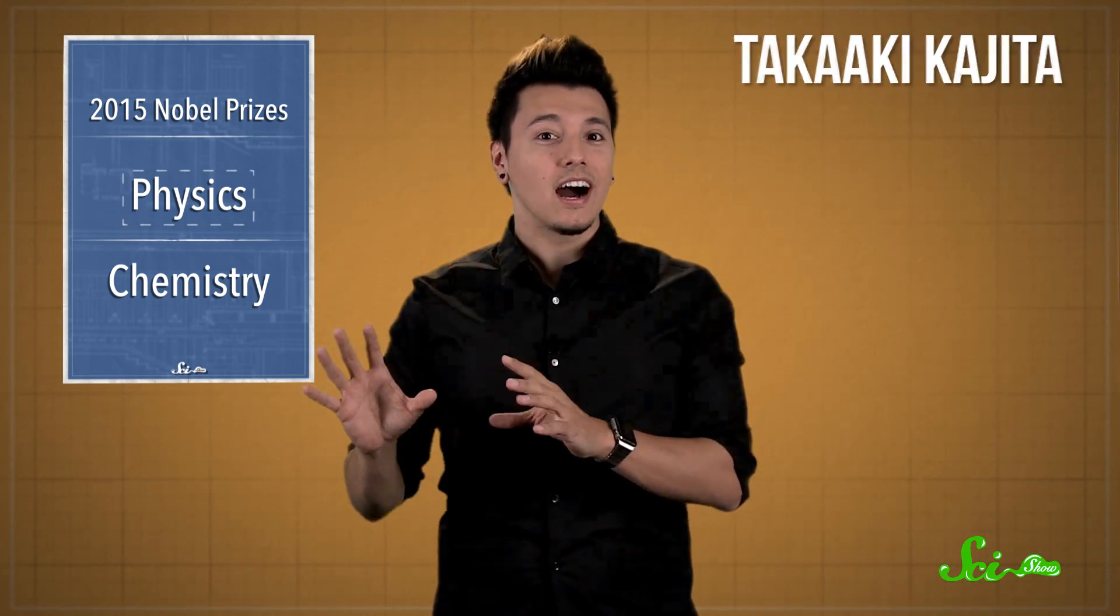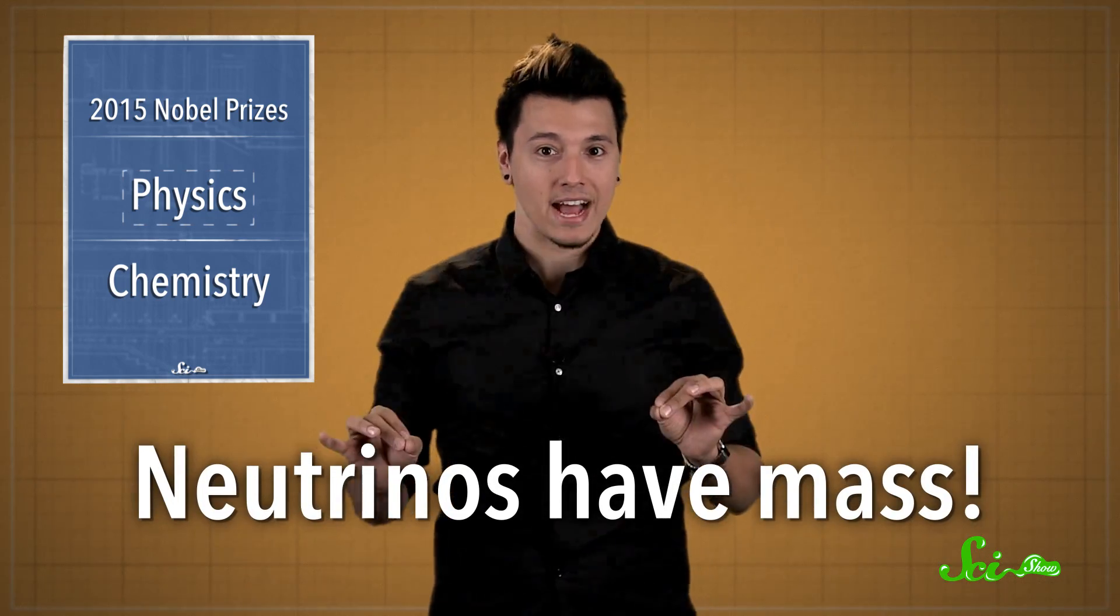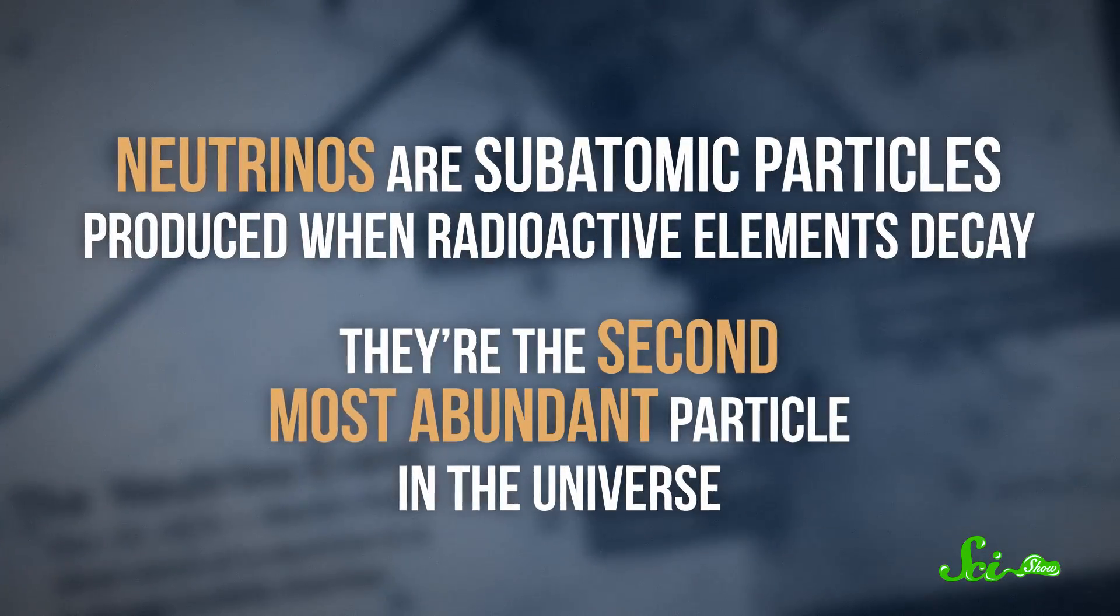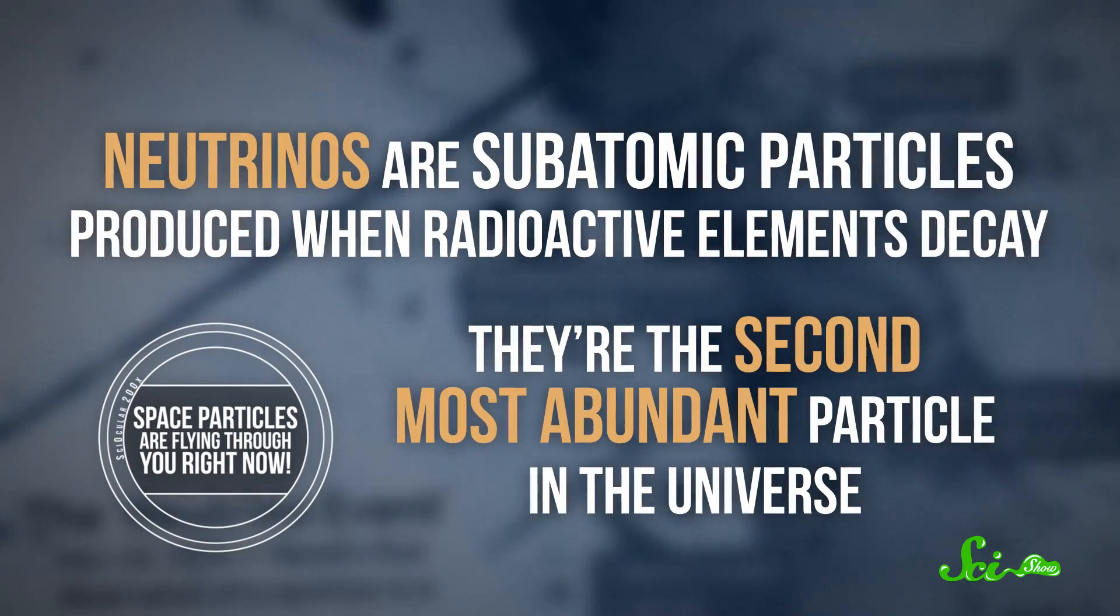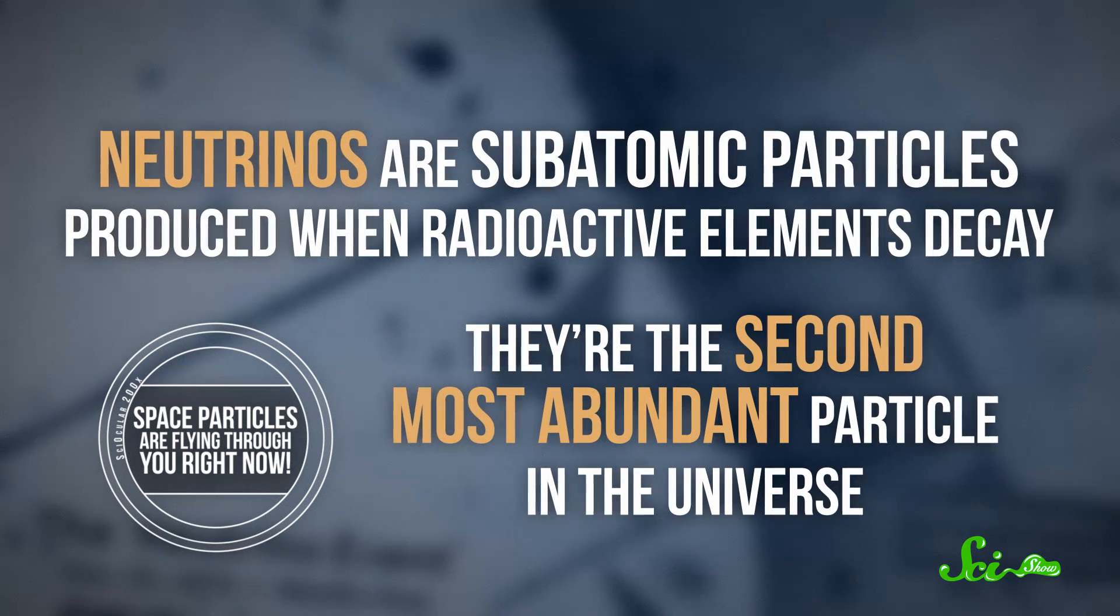The Nobel Prize for Physics was awarded to Takaaki Kajita and Arthur B. McDonald, who led separate teams of scientists who each proved neutrinos have mass. Neutrinos are subatomic particles produced when radioactive elements decay. They're the second most abundant particle in the universe, after photons. Billions of them are streaming through you right now.